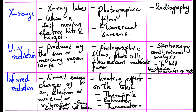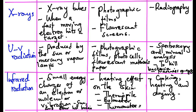Due to its ability to cause heating effects, infrared radiation can be used in cooking, heating and drying. In agriculture it is used to warm greenhouses. It can also be used in infrared photography.